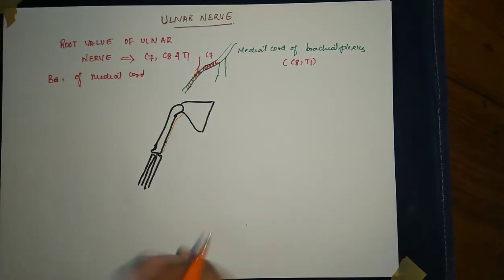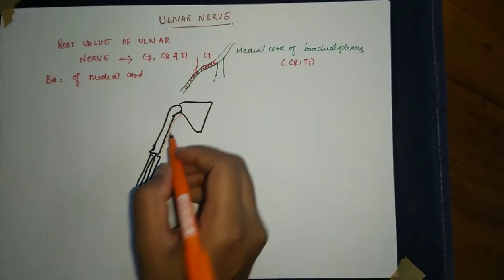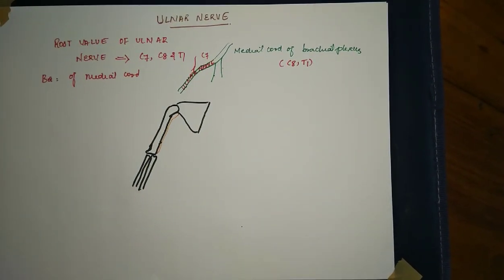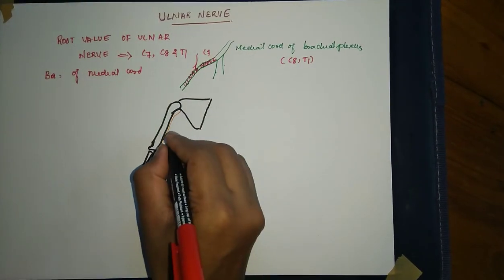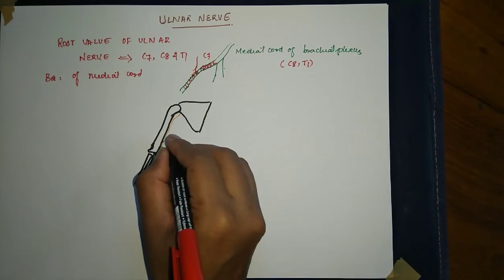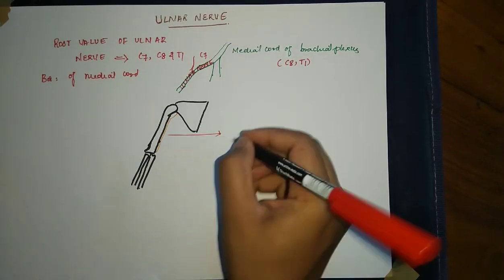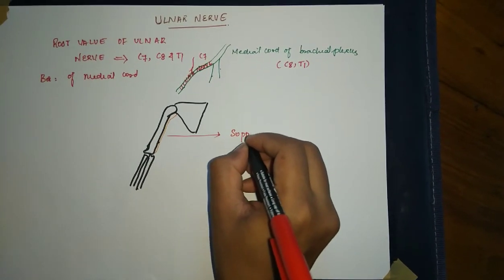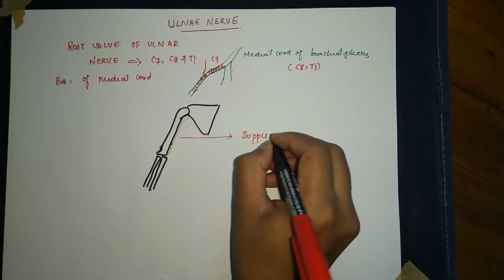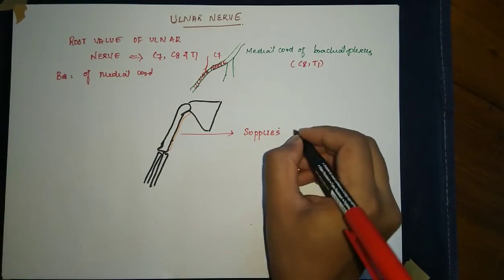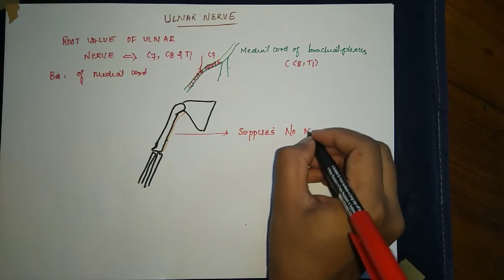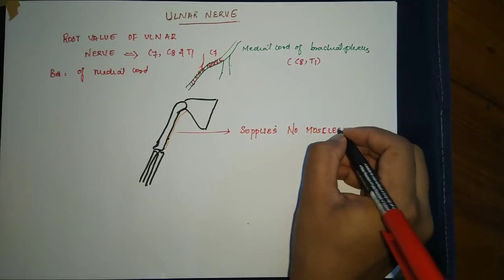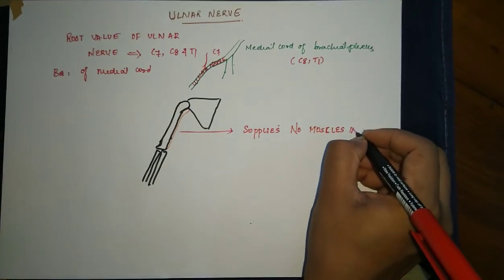One important thing to note is that the ulnar nerve has no supply in the arm — it supplies no muscles in the arm.